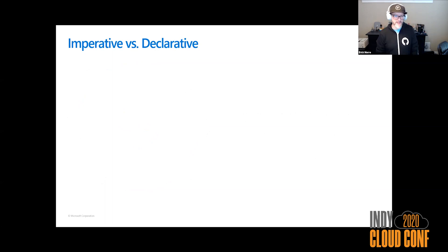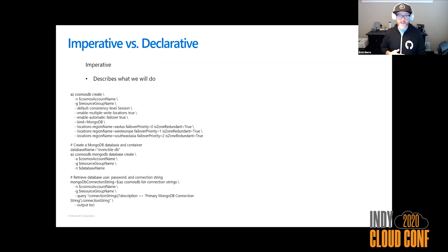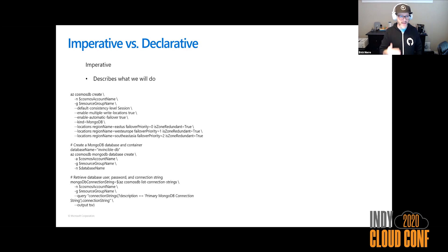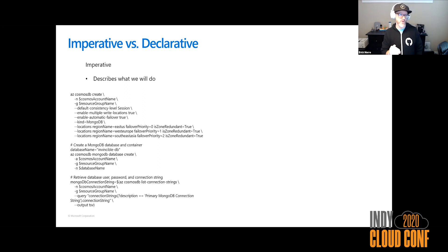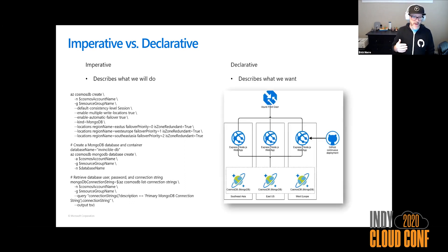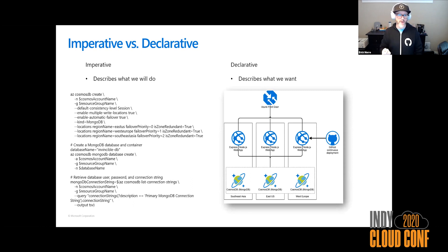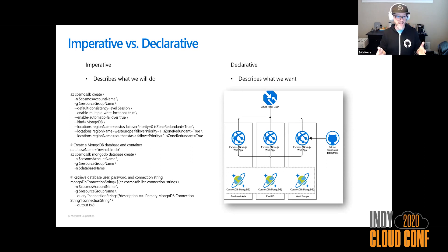Imperative versus declarative — what is this? Imperative language is something we know as scripting. If you script something, it's really describing what we will do and how we will do it, line by line. What you're looking at here is some Azure CLI commands where we're creating a database, setting some regions, adding a connection string — all of these things have to happen in a very specific order. A declarative language is really focused on describing what we want — the end state, the outcome. Instead of describing how I will do something, I literally say: this is what I want, now go build it for me.